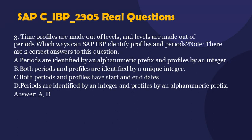Question 3. Time profiles are made out of levels, and levels are made out of periods. Which ways can SAP IBP identify profiles and periods? Note, there are two correct answers to this question. A. Periods are identified by an alphanumeric prefix and profiles are identified by an alphanumeric prefix and profiles by an integer. B. Both periods and profiles are identified by an alphanumeric prefix. C. Both periods and profiles have start and end dates. D. Periods are identified by an integer and profiles by an alphanumeric prefix. Answer: A, D.